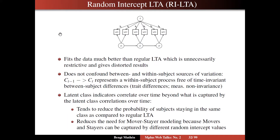On slide 32, we say a few more words about what this means and what the consequences are of using RILTA. It turns out that in all the examples I've seen so far, it fits the data much better than regular LTA, which seems unnecessarily restrictive and gives distorted results. The idea here is that you have longitudinal data, which is really a two-level model of time within persons. In any two-level model, you would at least have a random intercept somewhere, if not also a random slope. So we are finally adding a random intercept to this latent transition analysis model.